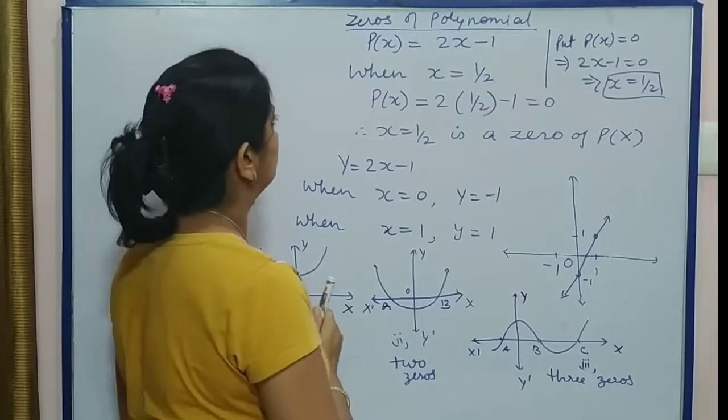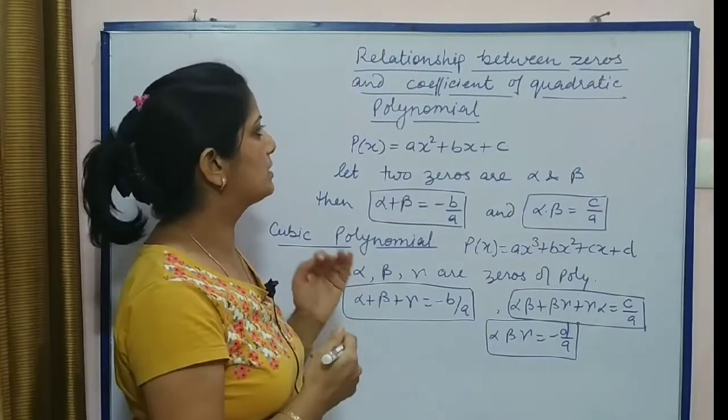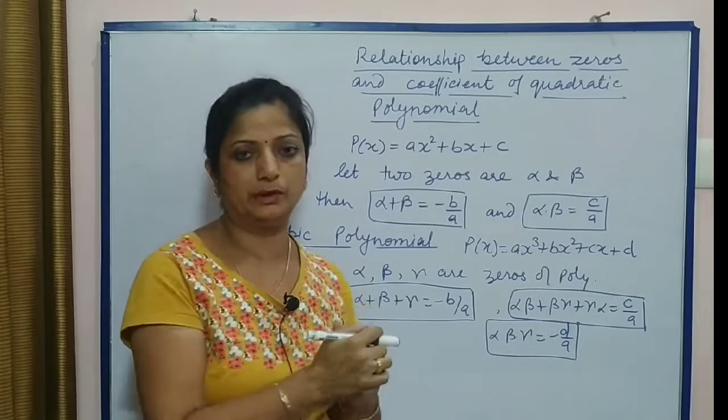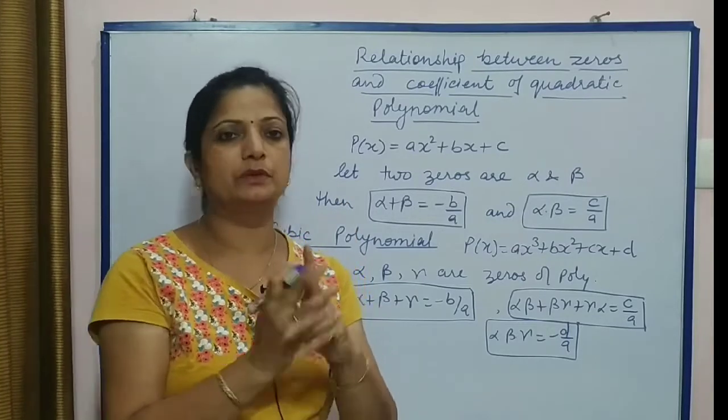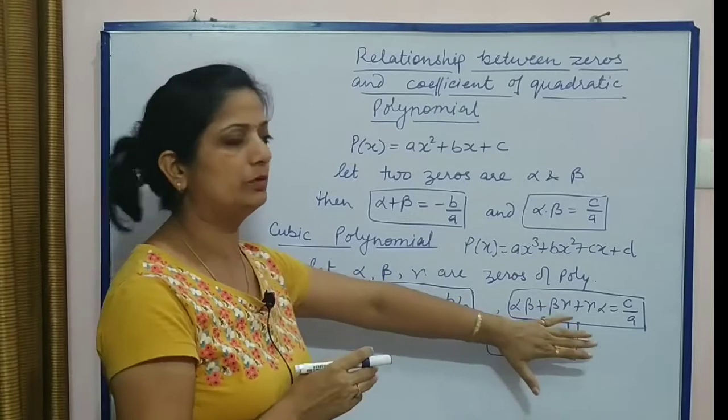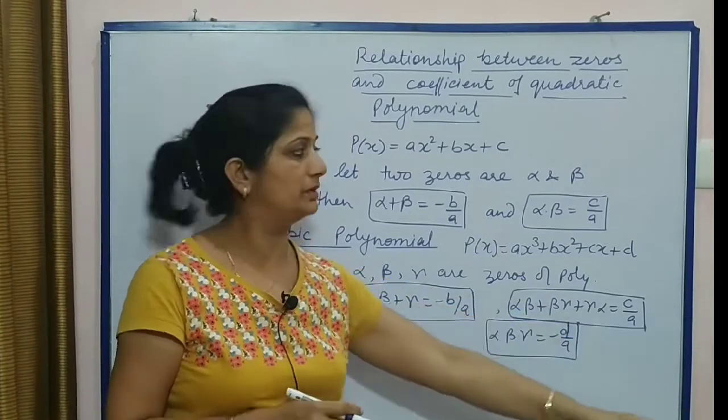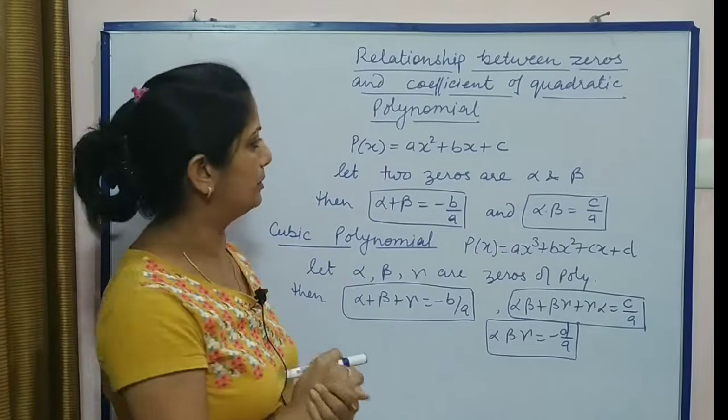Next topic is relationship between zeros and the coefficient of quadratic polynomial. Sabse pehle hum quadratic count kar rahe hain, phir cubic. Cubic waise board point of view se aapke liye jyada important nahi hai. Mainly aapke liye hai quadratic polynomial.